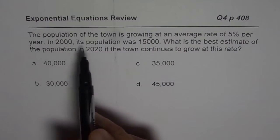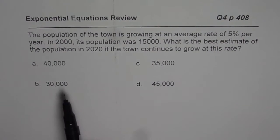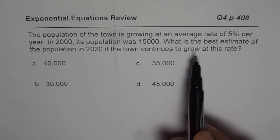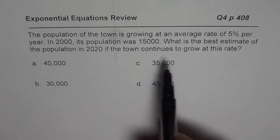We are reviewing exponential and trigonometry functions. The question here is: the population of the town is growing at an average rate of 5% per year. In 2000, its population was 15,000.